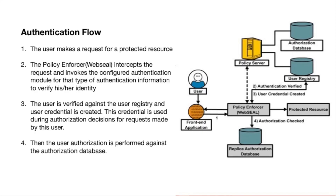Now we discuss the authentication flow of ISVA. Authentication is the process of identifying a user attempting to log into a secure domain. Requests for protected resources by unauthenticated users always result in an authentication challenge. WebSEAL provides several built-in authentication methods by default and also provides flexibility to customize the authentication mechanism. In the flow, first the user makes a request for a protected resource, then the policy enforcer (WebSEAL) intercepts the request and invokes the configured authentication module for that type of authentication information to verify the user's identity.